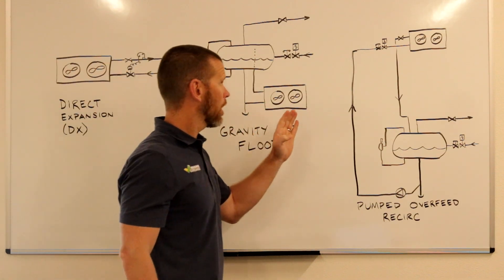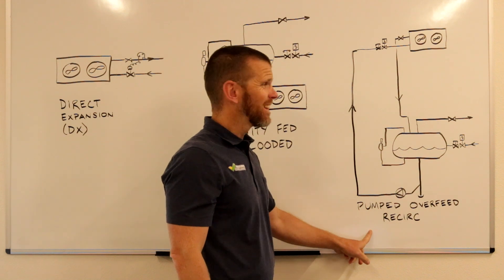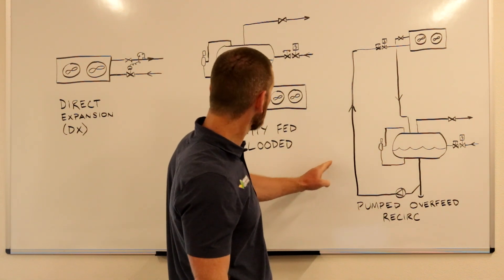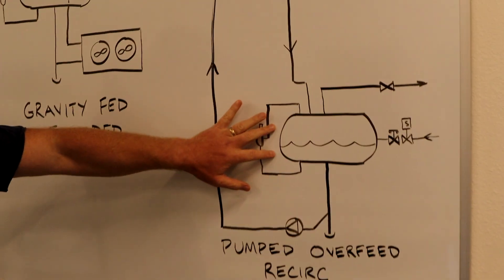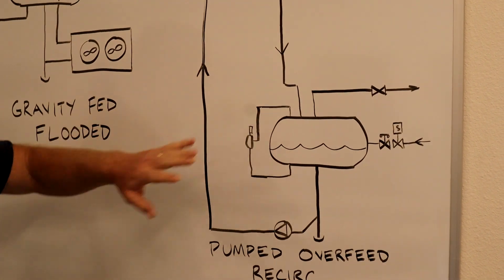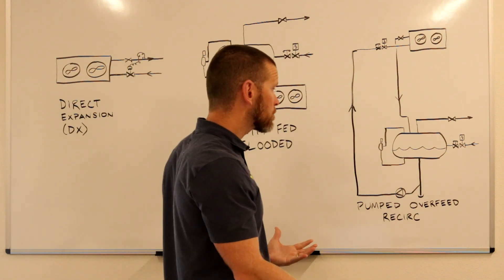A third option is our pumped overfeed or recirc system. This is very similar to the gravity flooded system in that we have a vessel again employed. We don't call this vessel a surge drum, typically it's called a recirculator, sometimes a low pressure receiver.